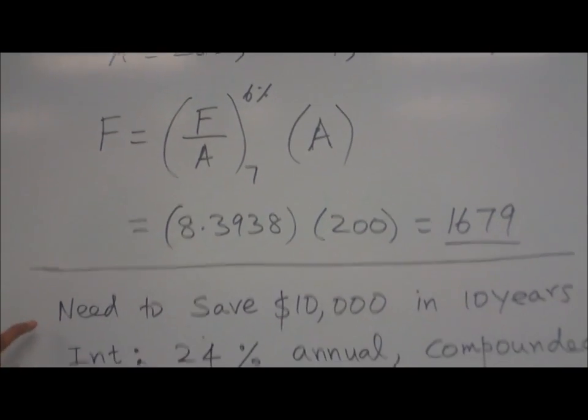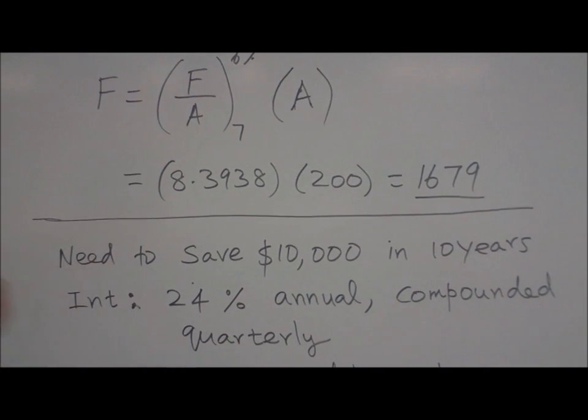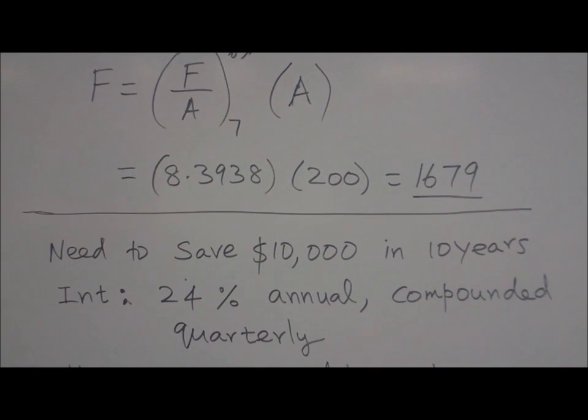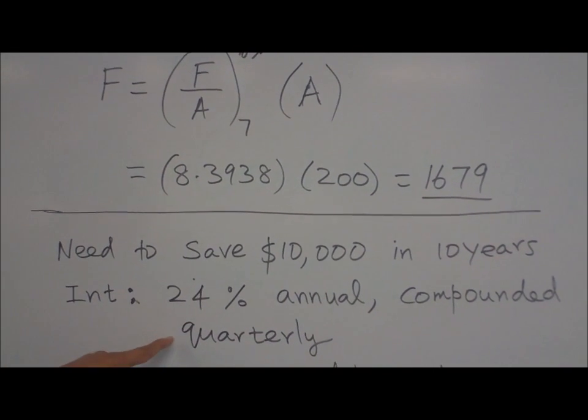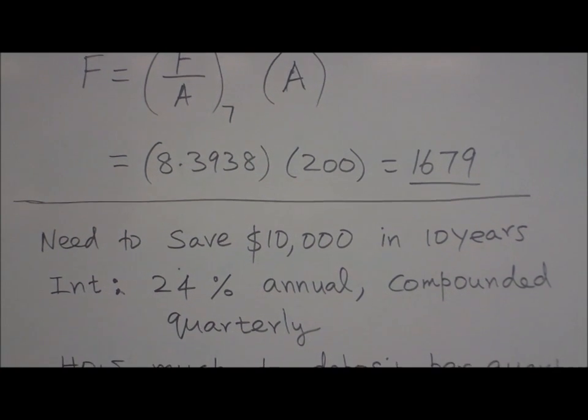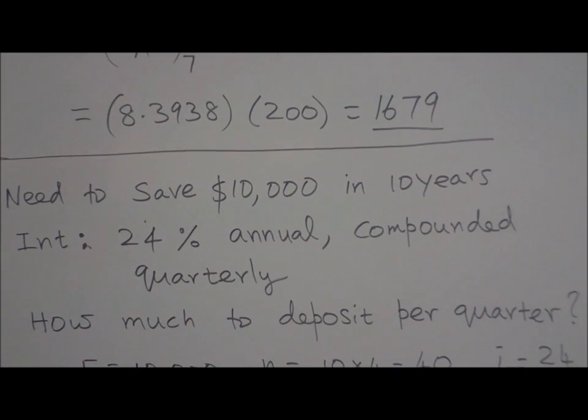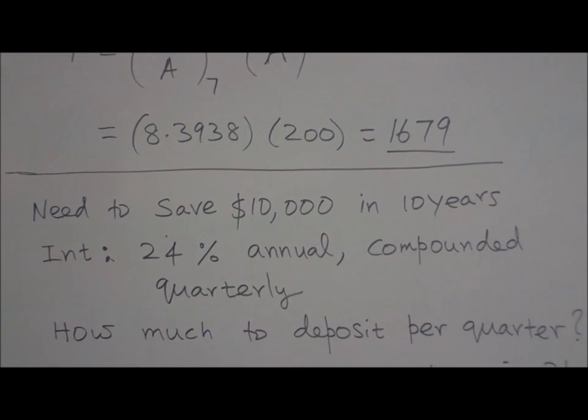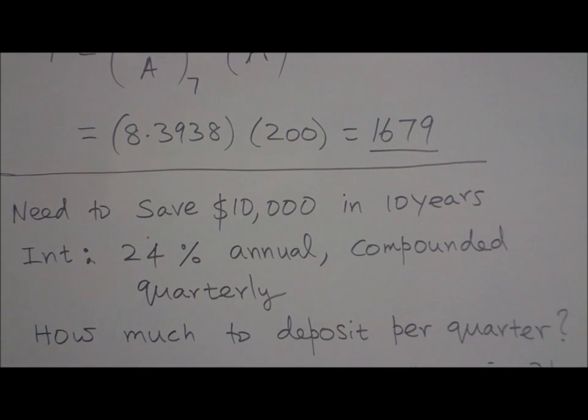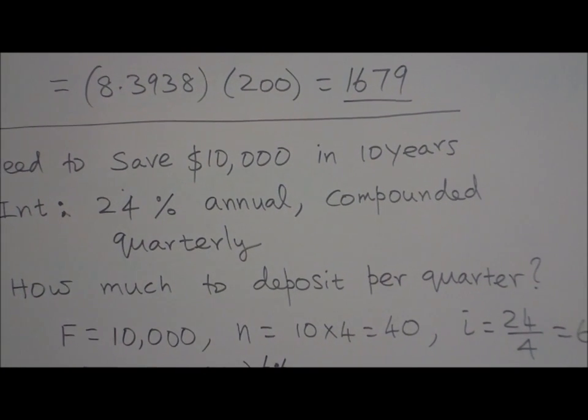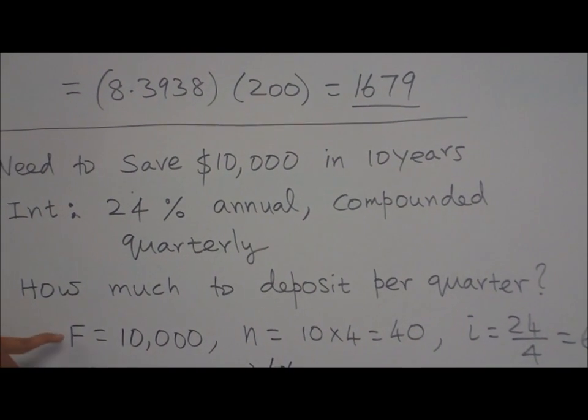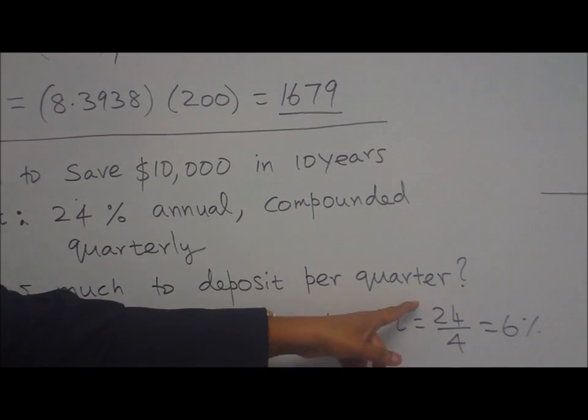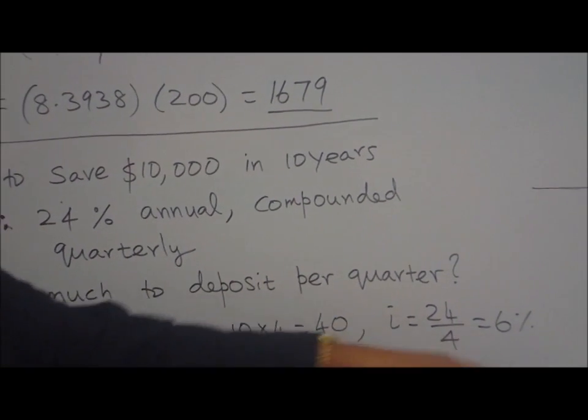Now another example. Suppose you need to save ten thousand dollars in ten years at the interest rate of twenty-four percent annual interest compounded quarterly. How much you have to deposit per quarter? So now everything in terms of the quarter you need. So for ten years, forty quarters. Each year four quarters. Ten times four forty quarters. F equal to ten thousand, future value. I per quarter, annual interest divided by four, equal to six percent.